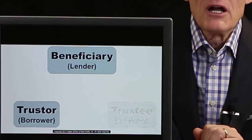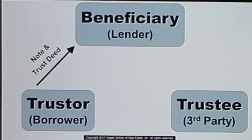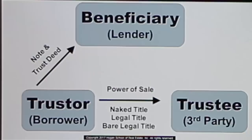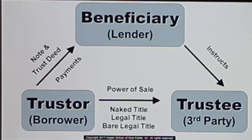The trustor signs the note and deed of trust and gives it to the beneficiary. The power of sale — also called naked title or bare legal title — is given by the trustor to the trustee. The trustor makes the monthly payments to the beneficiary; the trustee doesn't receive any payments. The beneficiary will instruct the trustee to do something only in one of two circumstances: if the borrower pays it off, or if the borrower defaults.